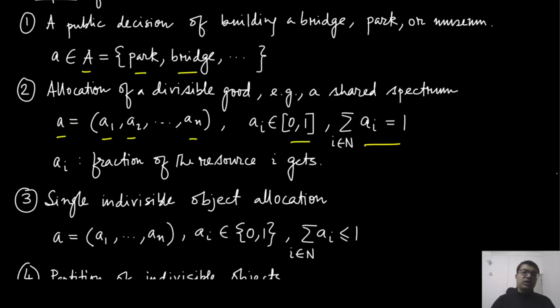If you are thinking about an indivisible object that is being allocated among these players, then this allocation vector will be very similar. The only difference is that now these a_i can take values only 0 or 1, and the sum of all these a_i can be at most 1, which means that exactly one individual is going to get that object or nobody gets that object.